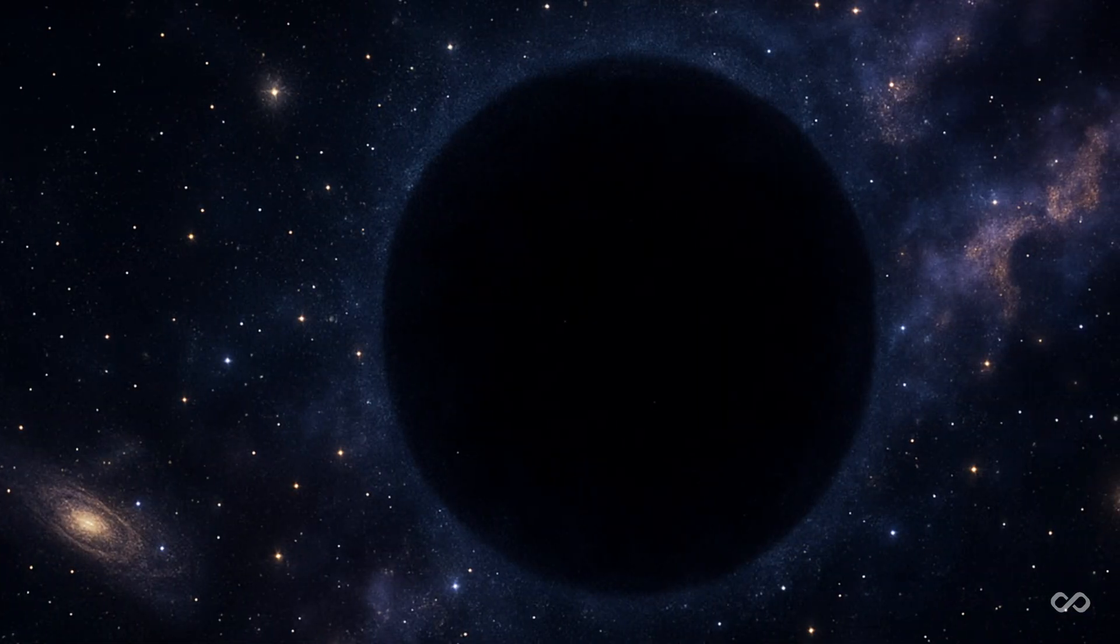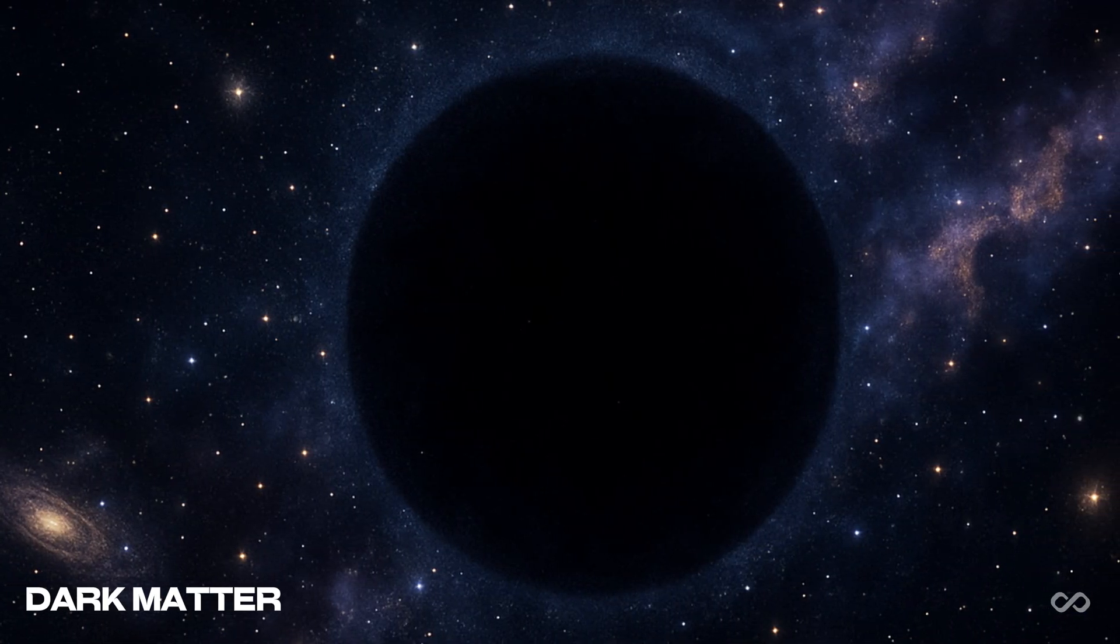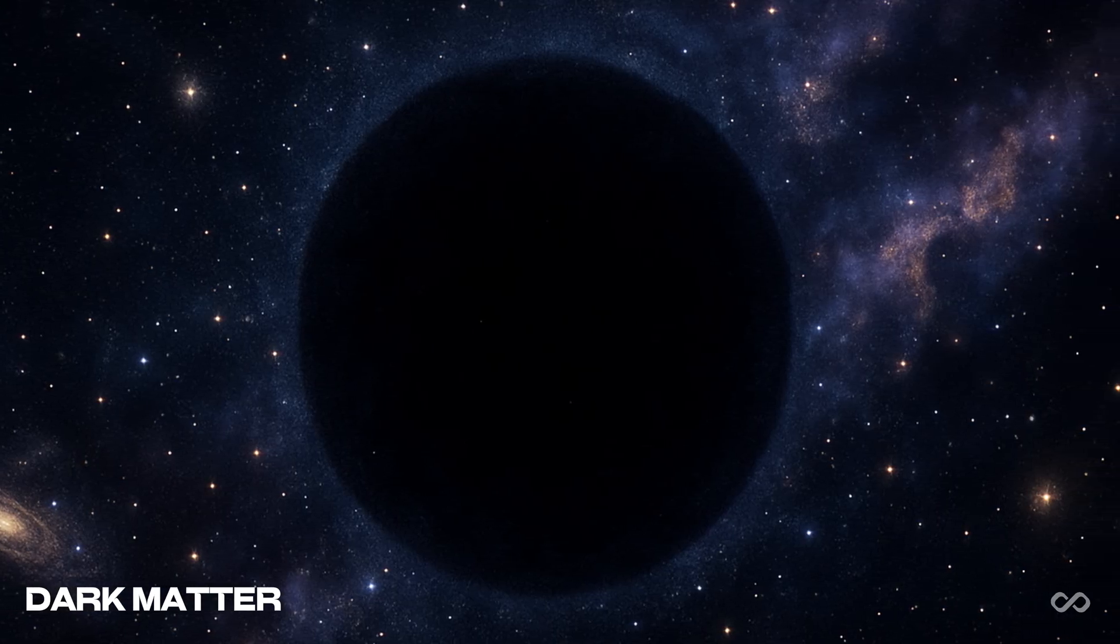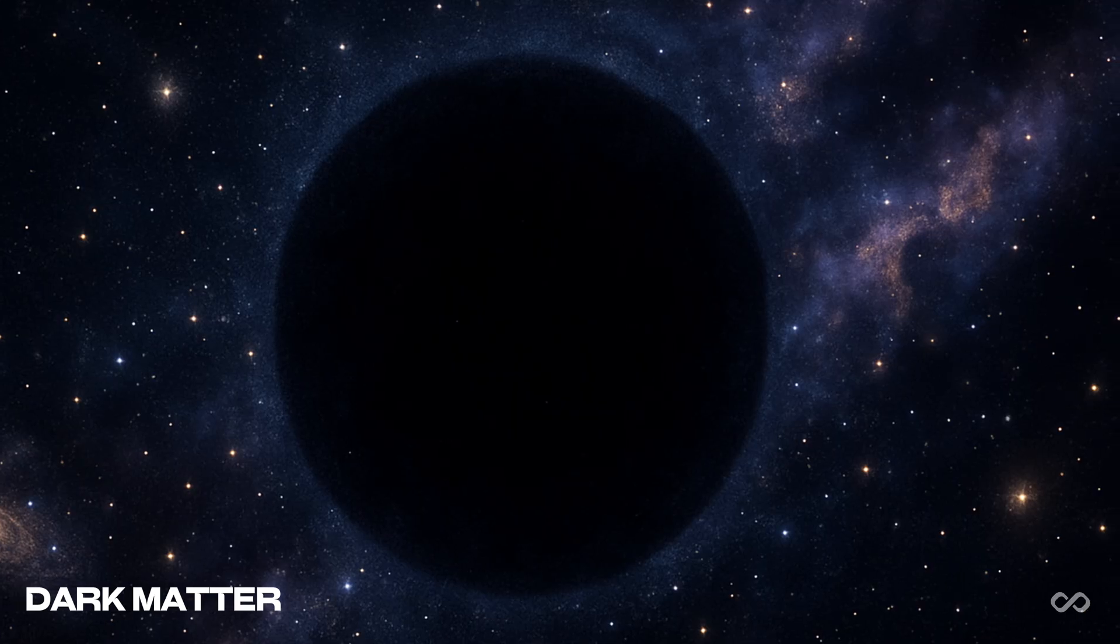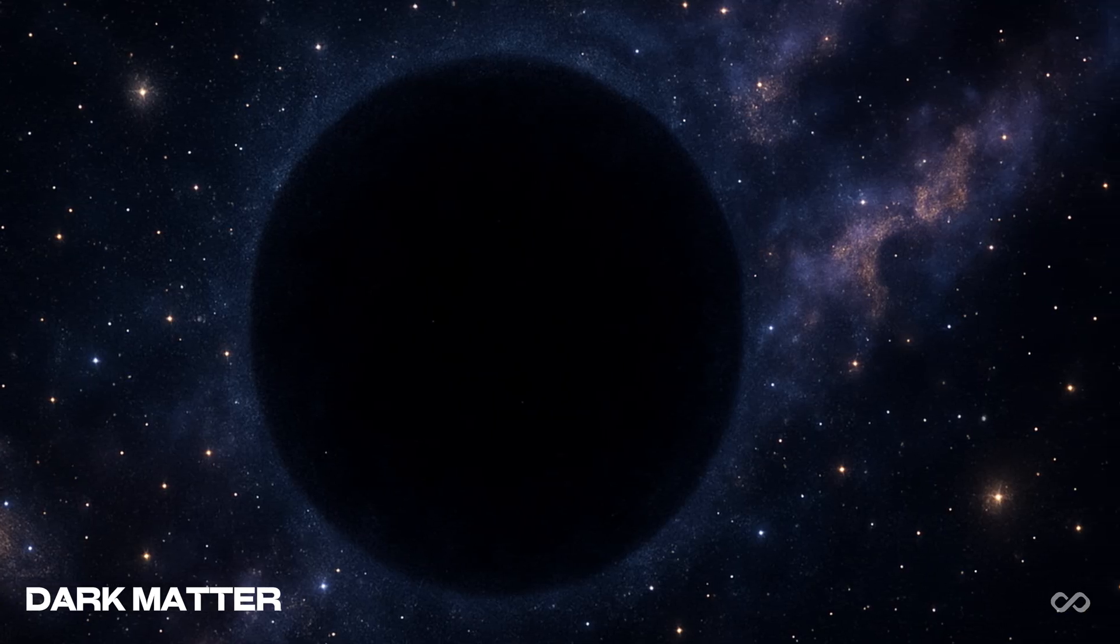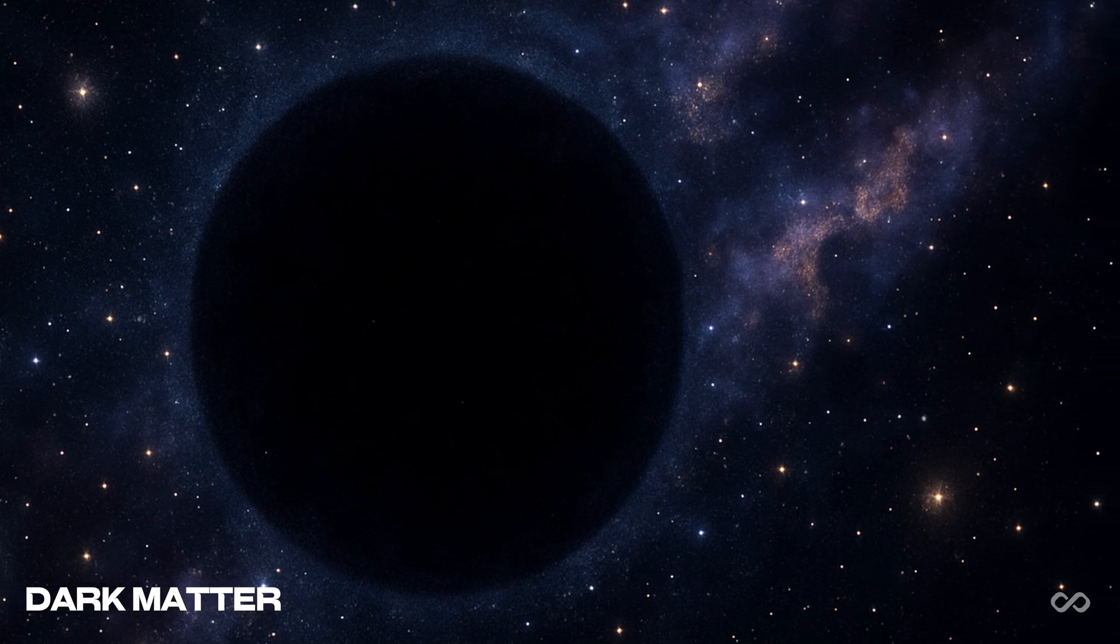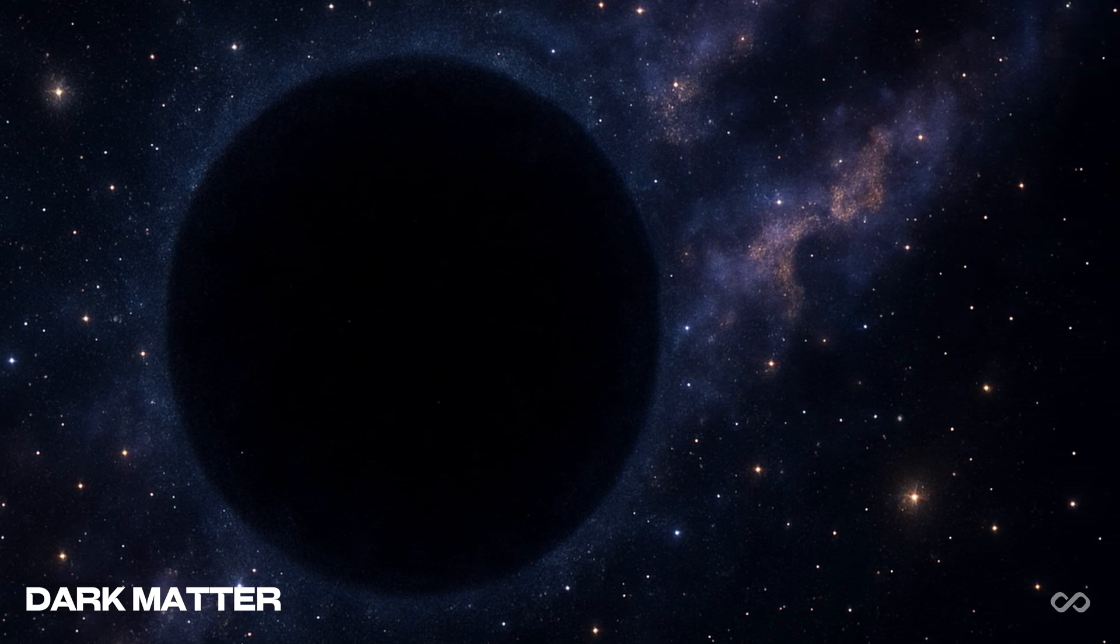Let's start with the basics. Dark matter is the name we give to the unknown stuff in the universe that doesn't emit or reflect light. In fact, it doesn't seem to interact with electromagnetic radiation at all. So why do we think it exists? Because the universe is misbehaving.